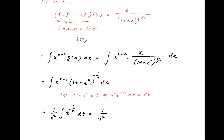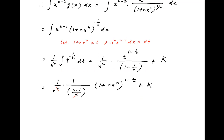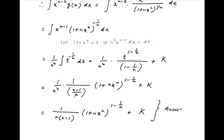Therefore this integral is equal to 1 upon n squared times the integral of t raised to the power minus 1 upon n dt, which equals 1 upon n squared times t raised to the power 1 minus 1 upon n, divided by 1 minus 1 upon n, plus the constant of integration. Substituting back the value of t, this simplifies to 1 upon n times n minus 1 times 1 plus n times x raised to the power n, whole raised to the power 1 minus 1 upon n, plus the constant of integration. This is the required answer.